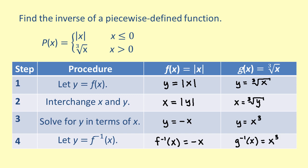Putting these pieces together, we get p inverse of x equals negative x when x is less than or equal to 0, and x cubed when x is greater than 0.